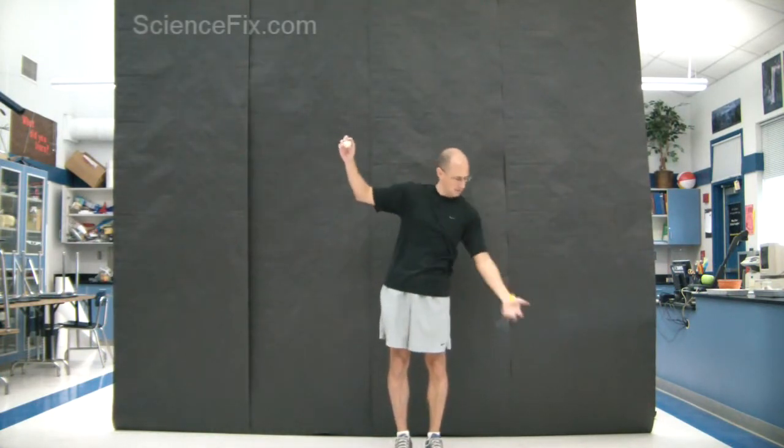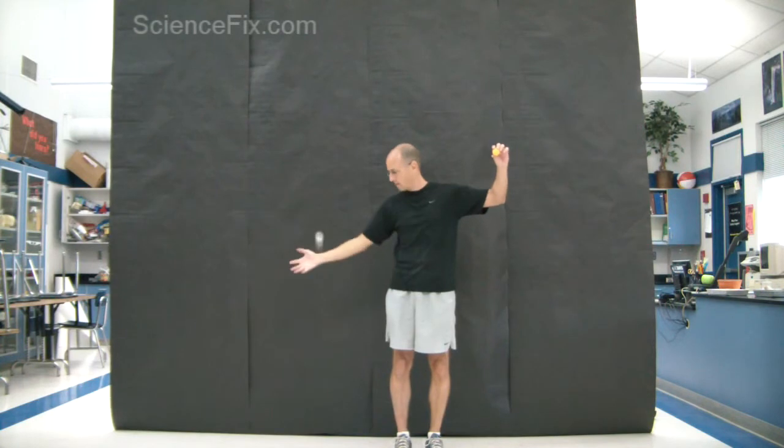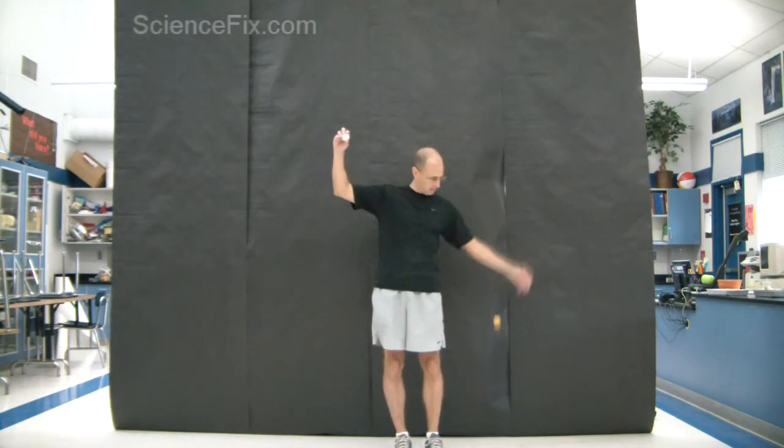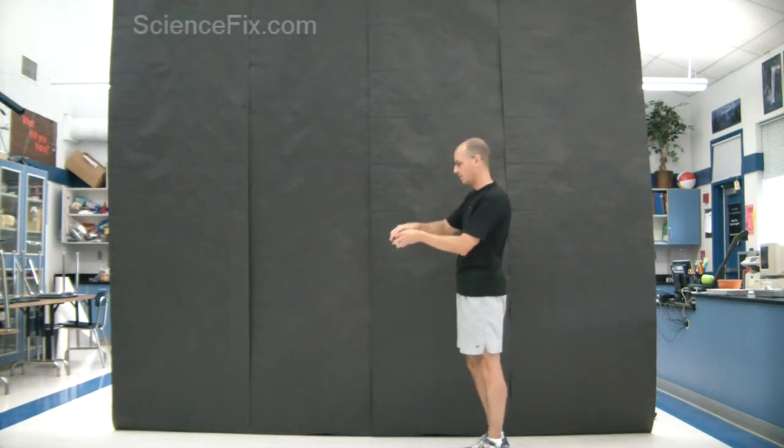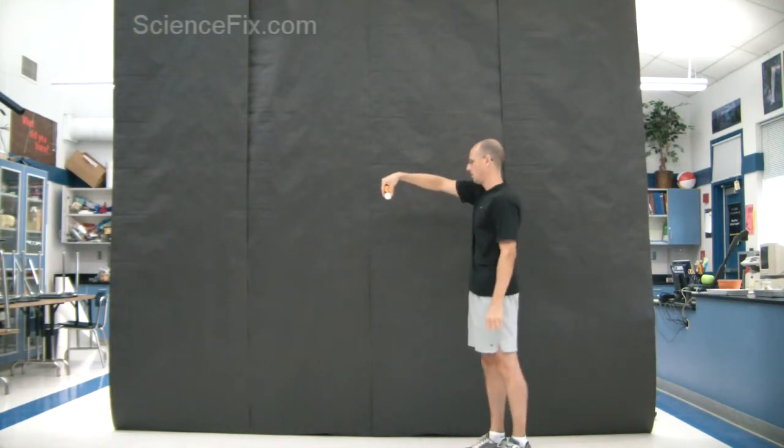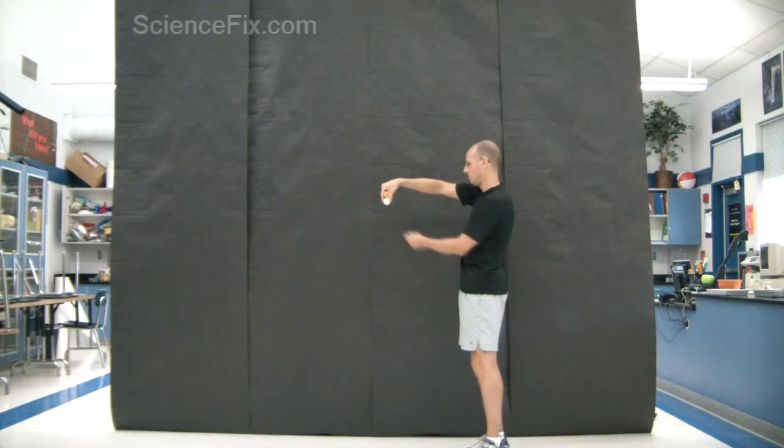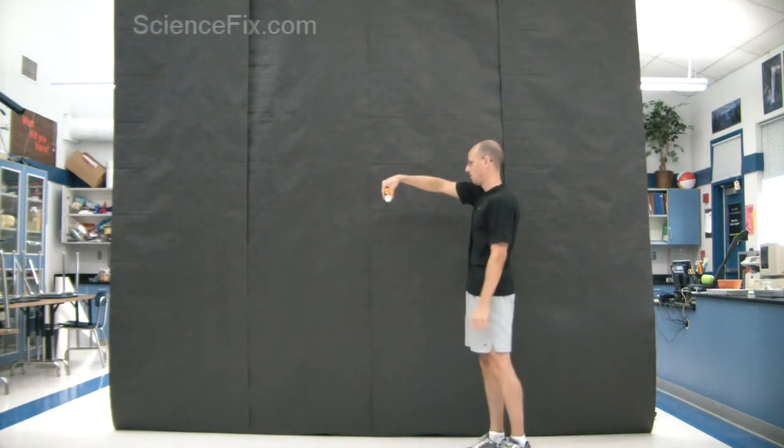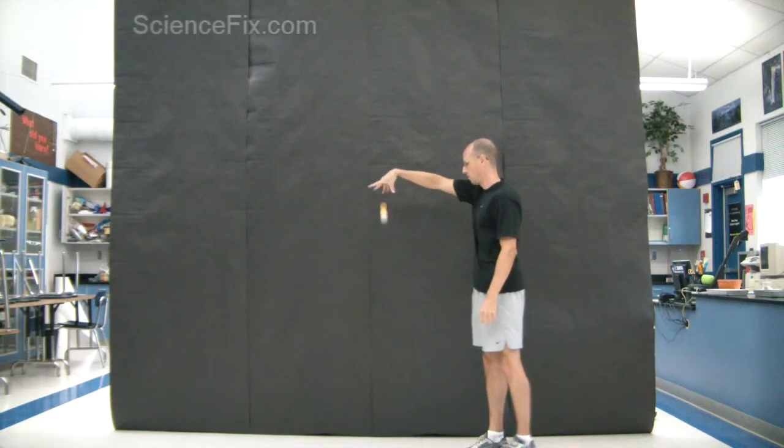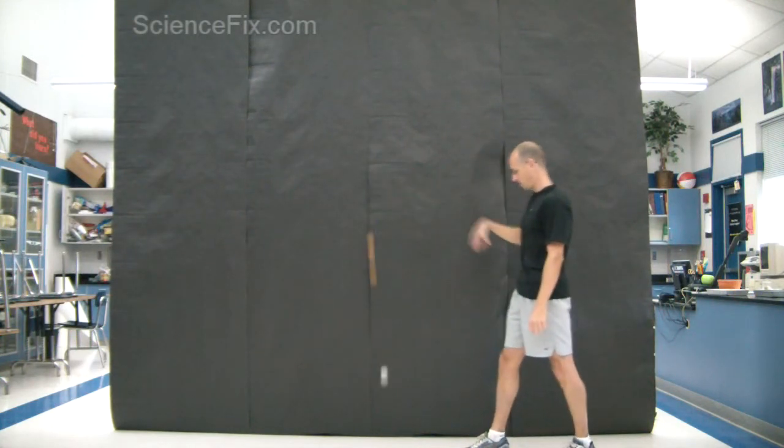Now we have a golf ball and a ping pong ball and they are dropped from a certain height and you can see how high they bounce back up. Now we're going to do the same thing as before and place the ping pong ball on top of the golf ball and let them go. Just like before, the two forces are added together to create a greater force that propels the ping pong ball to a much greater height than before.